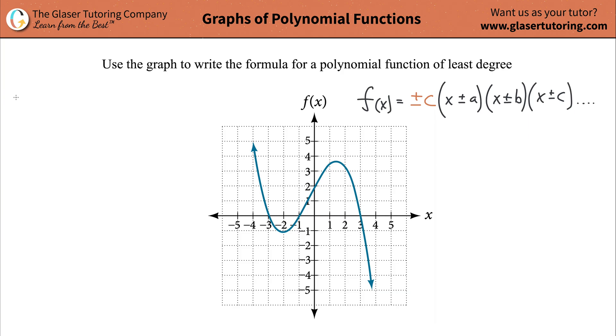Anyway, the first thing I want to do is understand the end behavior of the function. Now, by end behavior, I mean what happens on the periphery. In other words, what happens when the function goes all the way to the left, and when the function goes all the way to the right?